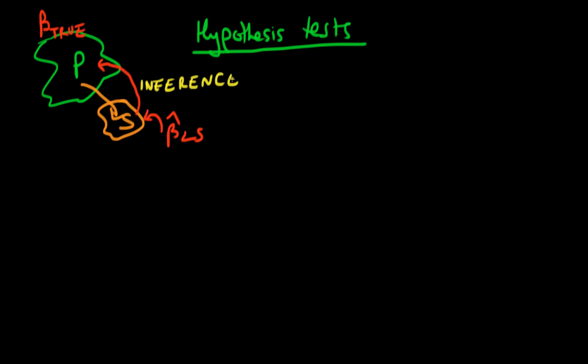So what can we infer about what is going on in the population given that we only have a sample? Hypothesis tests are our way of making statements or testing hypotheses about what's actually going on in the population given that we only have a sample.